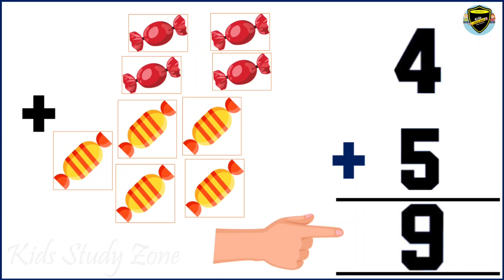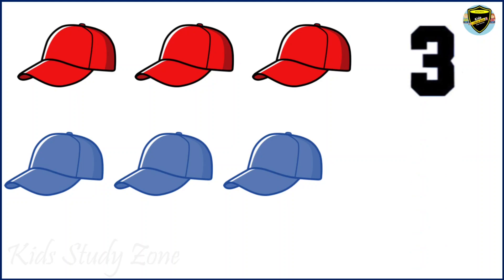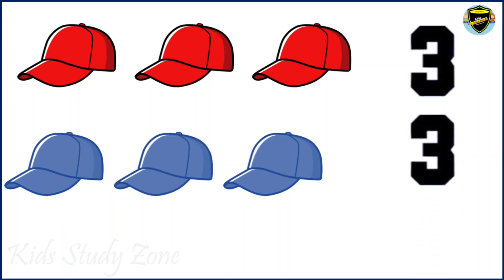Let's see one more example. We have some caps over here. Some caps are in red color and some caps are in blue color. So let's find the total number of caps. We will count the red caps first: 1, 2, 3. So children, we have 3 red caps. Now let's count the blue caps: 1, 2, 3. We have 3 blue caps also.